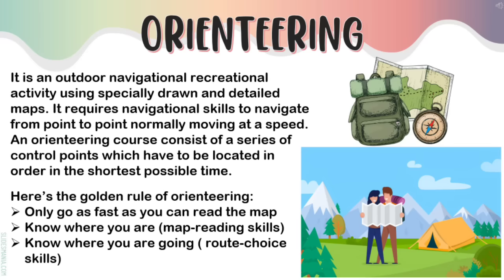The last outdoor recreational activity is orienteering. It is an outdoor navigational recreational activity using specially drawn and detailed maps. It requires navigational skills to navigate from point to point, normally moving at speed. An orienteering course consists of a series of control points which have to be located in order in the shortest possible time. Here's the golden rule of orienteering: first, only go as fast as you can read the map. Second, know where you are — you should have map reading skills. Third, know where you are going — have route choice skills.